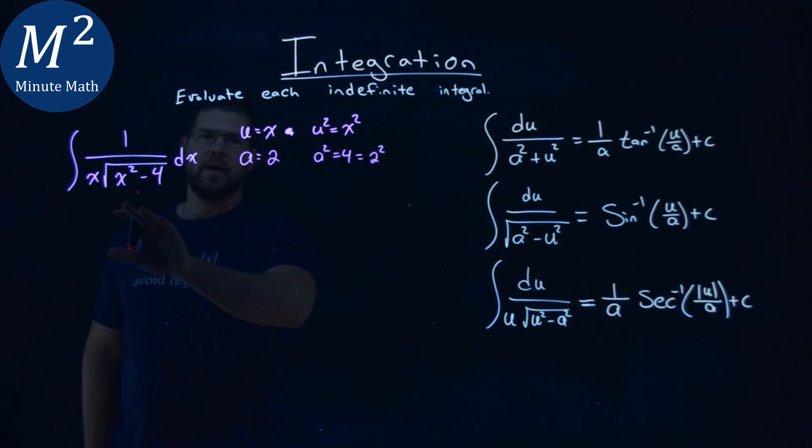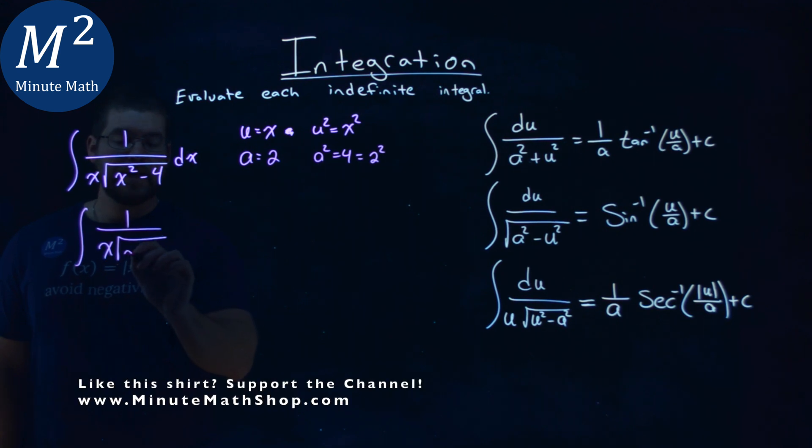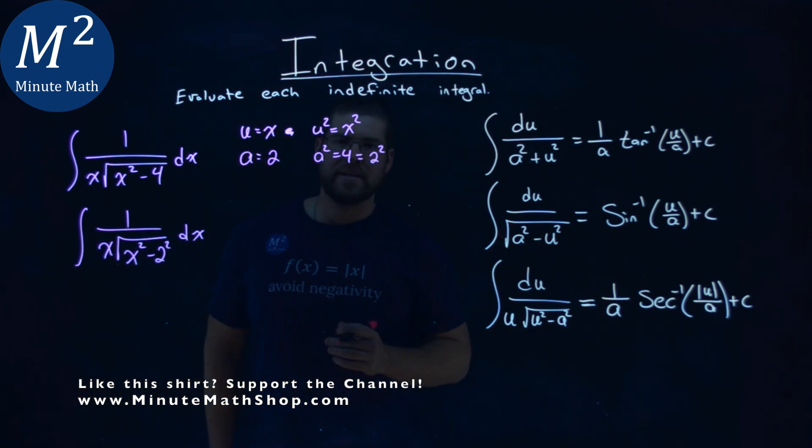So now let's go rewrite this with really that 2 squared going in for the 4. So we have the integral here of 1 over x square root x squared minus 2 squared dx. And now it lines up perfectly with our arc secant.